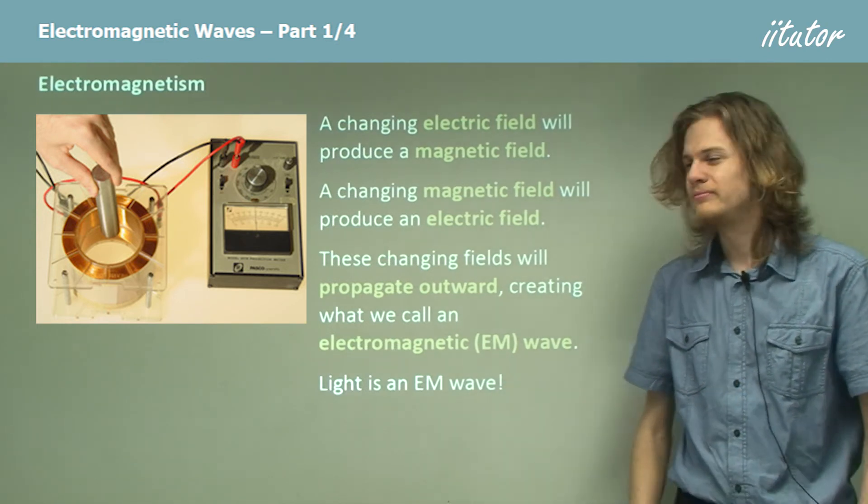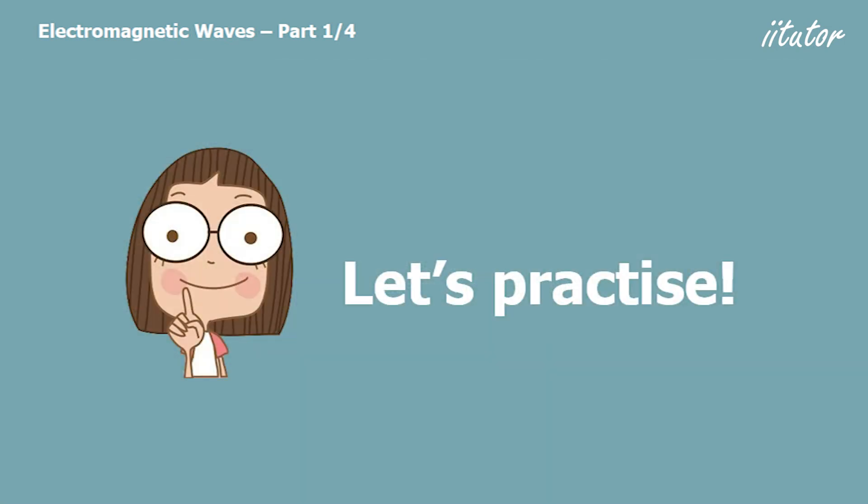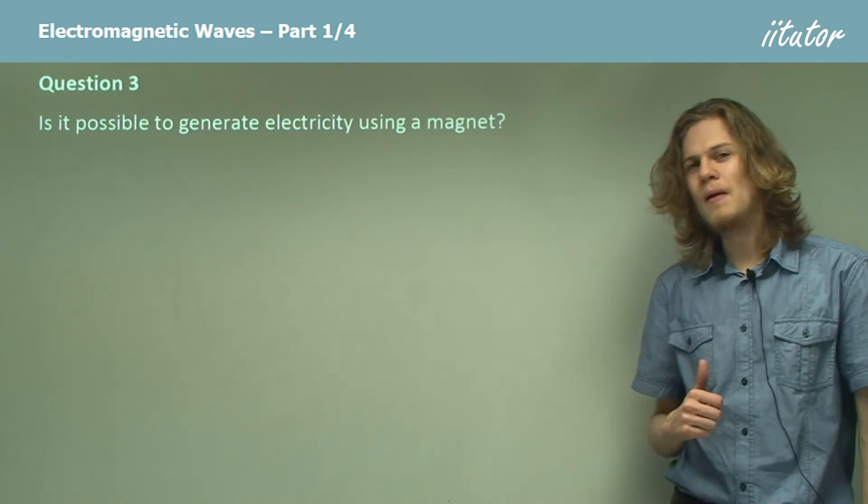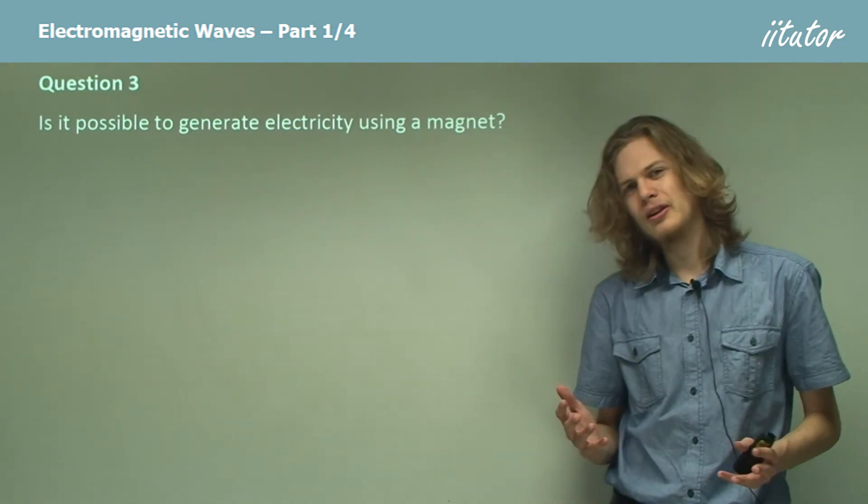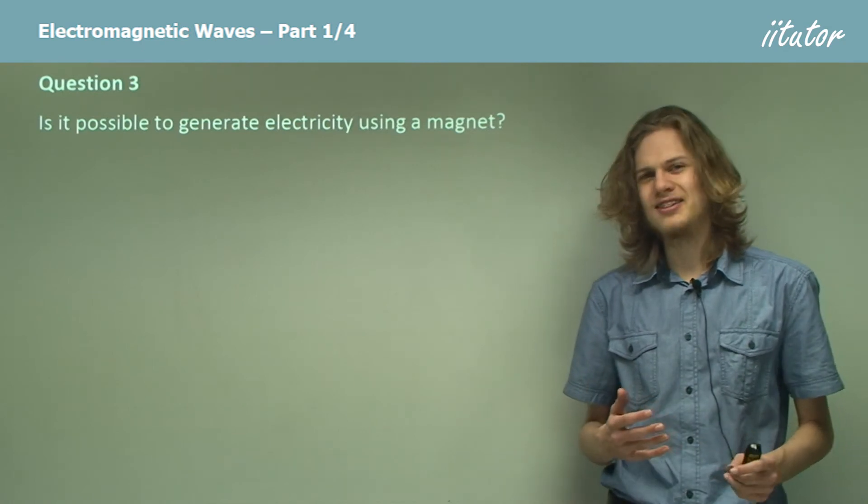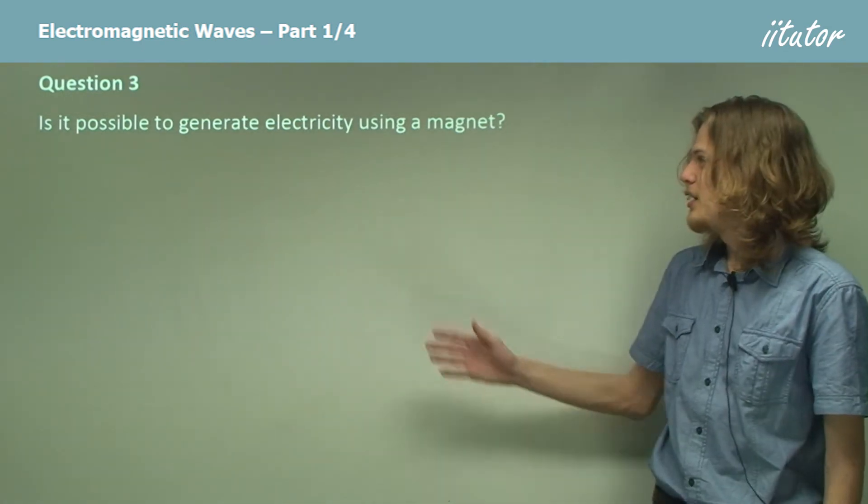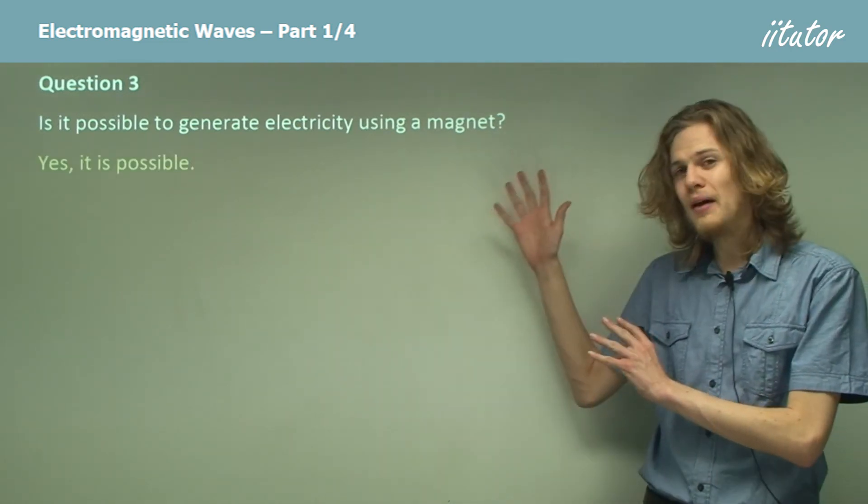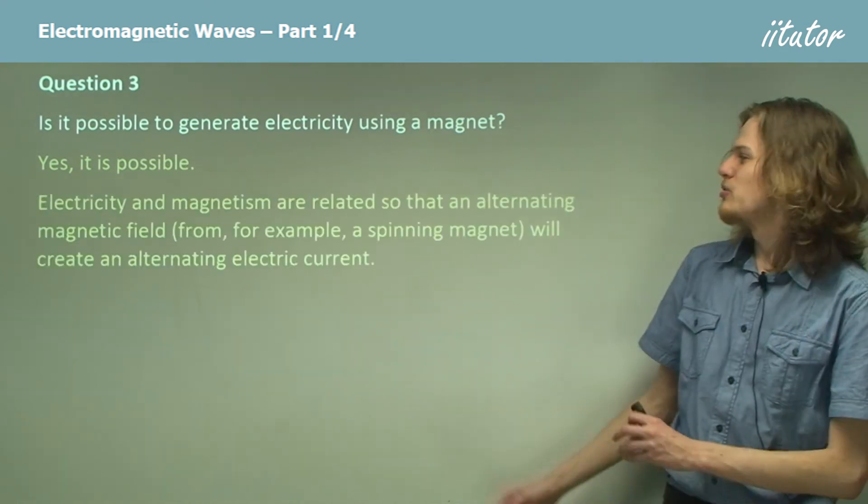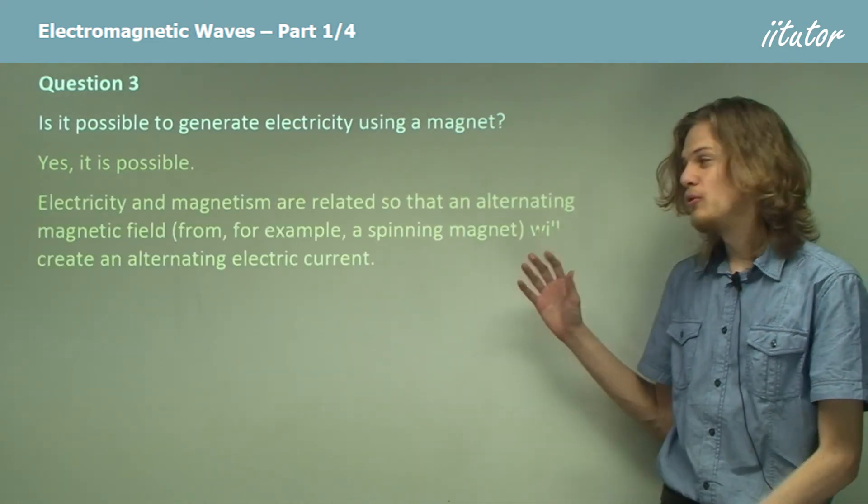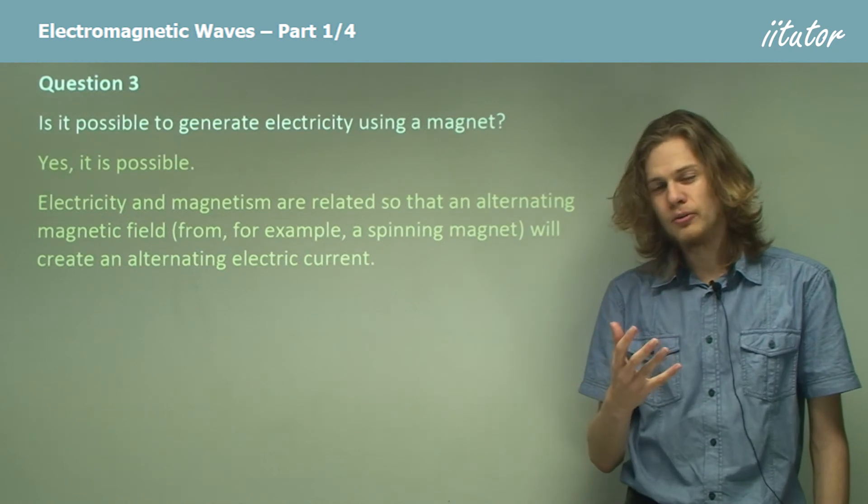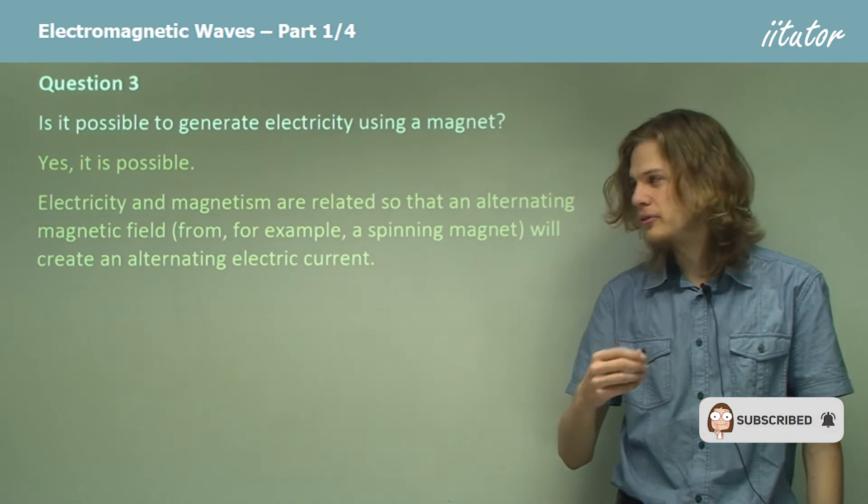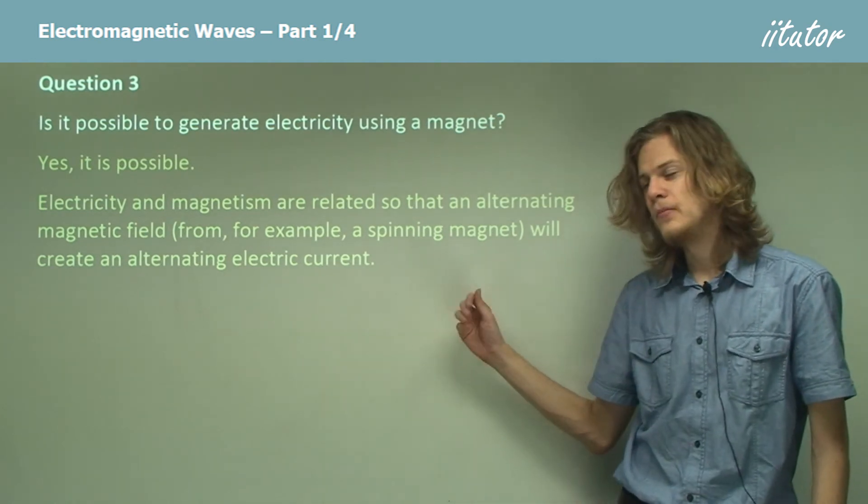Is it possible to generate electricity using a magnet? I mentioned near the start a little bit about electromagnetism. All you need to know is that yes, it is possible. We can use a magnet to generate electricity. It turns out that electricity and magnetism are related, so that a changing or alternating magnetic field, going north-south, north-south, as in a spinning magnet, will create an electric current.